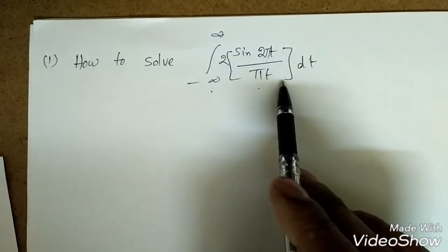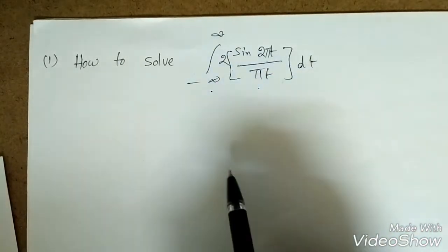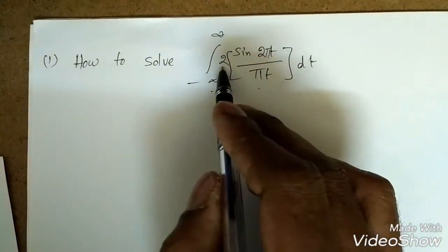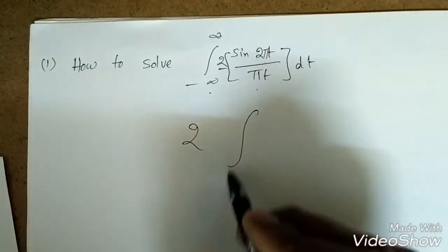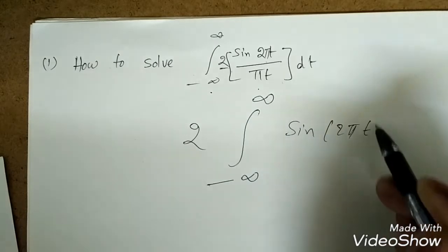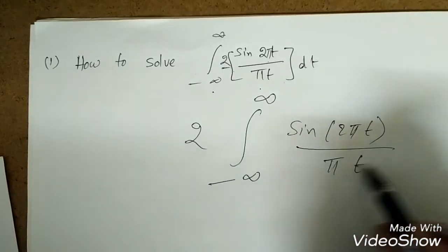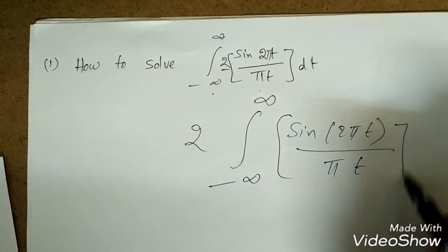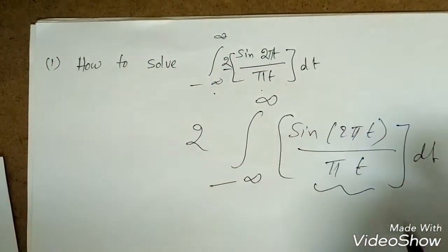This is the amplitude, so I can write it as minus infinity to infinity sine 2πt by πt. This is the signal, so if I take x of t, there are some ways to solve very quickly.